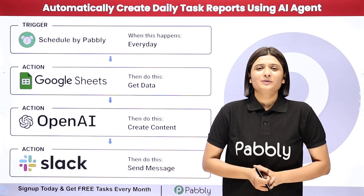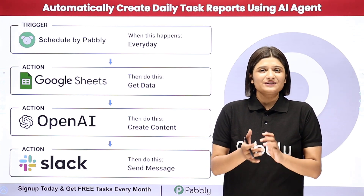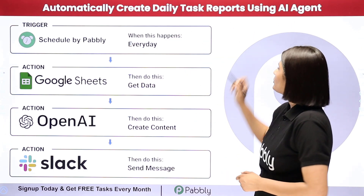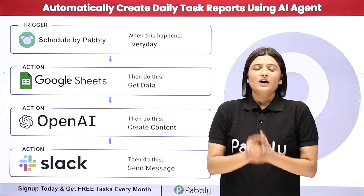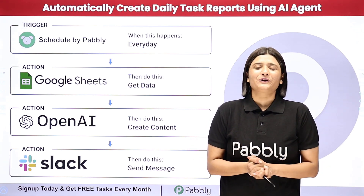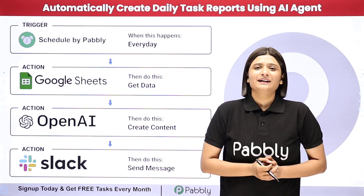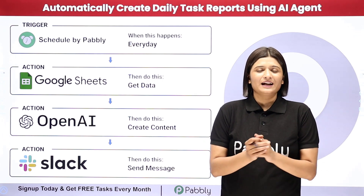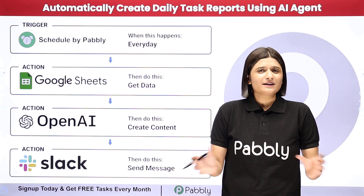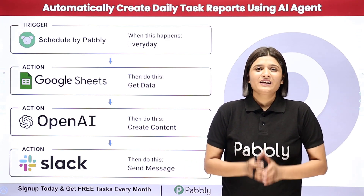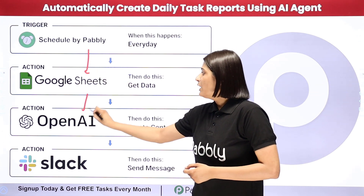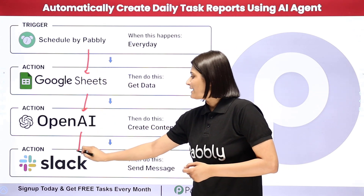Hello everyone, welcome back to Pabbly. In this video we are going to learn how to automatically create daily task reports using an AI agent. I am going to collect my employees' daily work report with the help of this automation. With the help of Pabbly Connect I have created this automation. Pabbly Connect is an amazing automation and integration software which requires no coding or programming skills. I have built the connection between Schedule by Pabbly, Google Sheets, OpenAI which is my AI agent, and Slack.